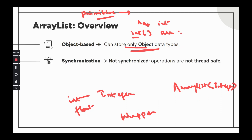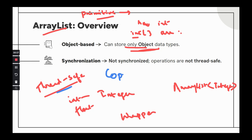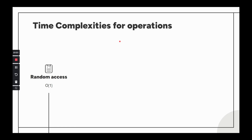Regarding synchronization — ArrayList is not thread-safe, which means if multiple threads try to manipulate the ArrayList, we can see race conditions. This is why there is a separate video on CopyOnWriteArrayList, which covers thread safety in detail.